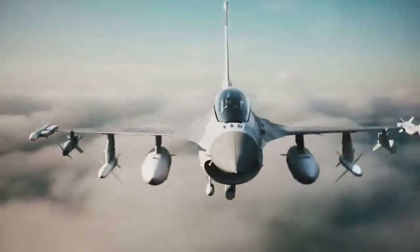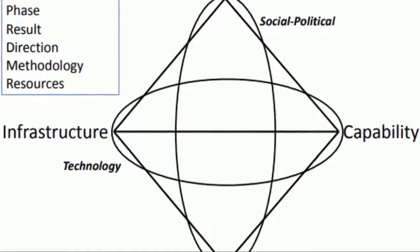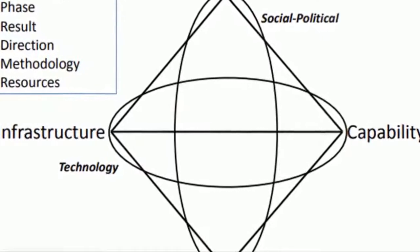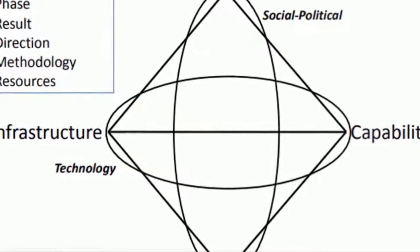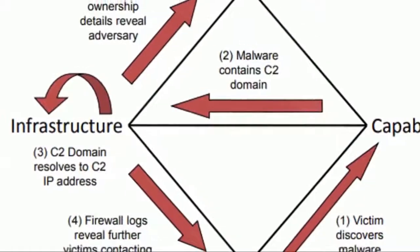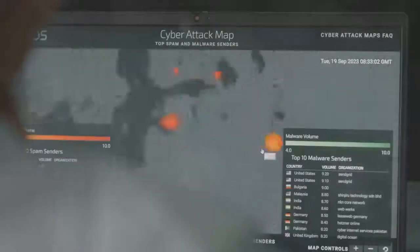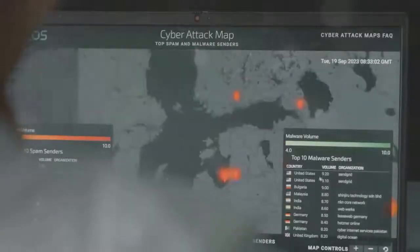Next, the Diamond Model. Think of it as a way to dissect cyber threats by analysing the adversary, capability, infrastructure and victim. This gives you a clear map of the attack structure.